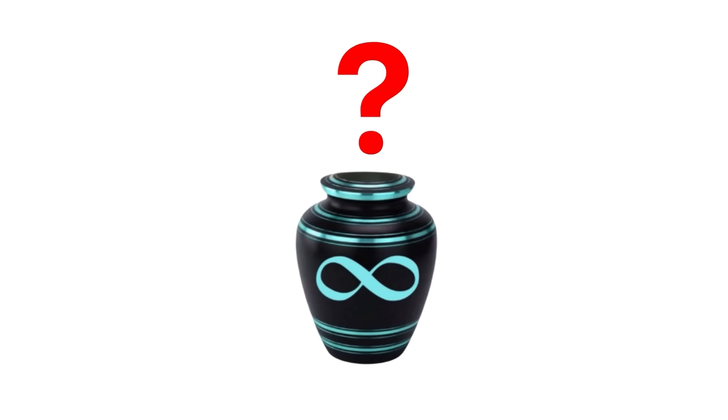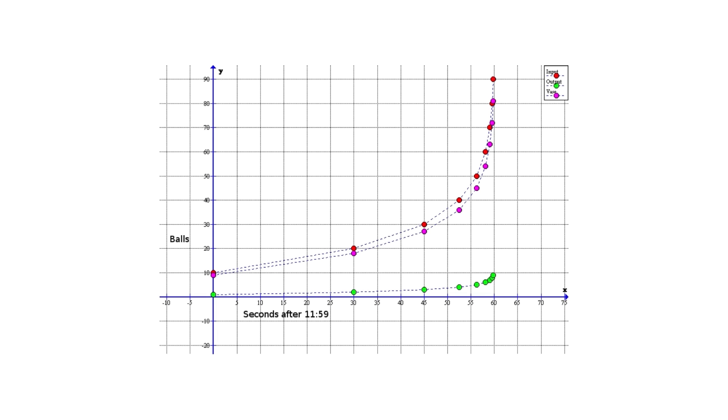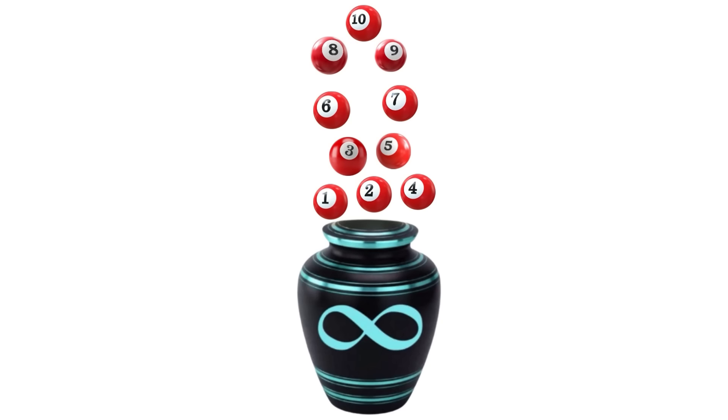The intuitive answer appears to be infinitely many. Each step seems to involve a net increase of 9 balls in the vase, so the number of balls just grows towards infinity. However, there is a sense in which the vase may be empty. Imagine that, at the start, all of the balls are numbered.